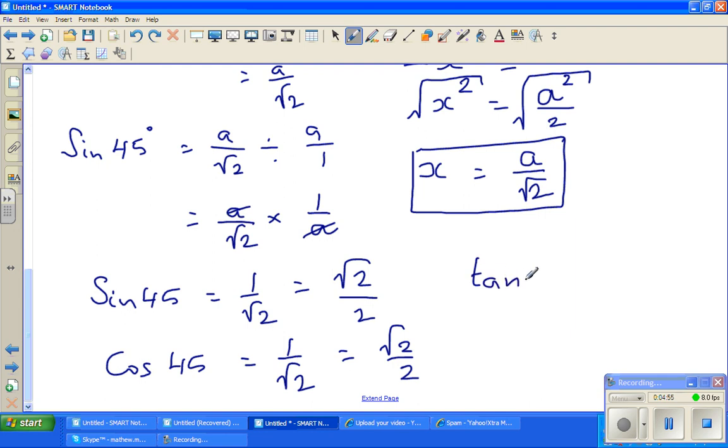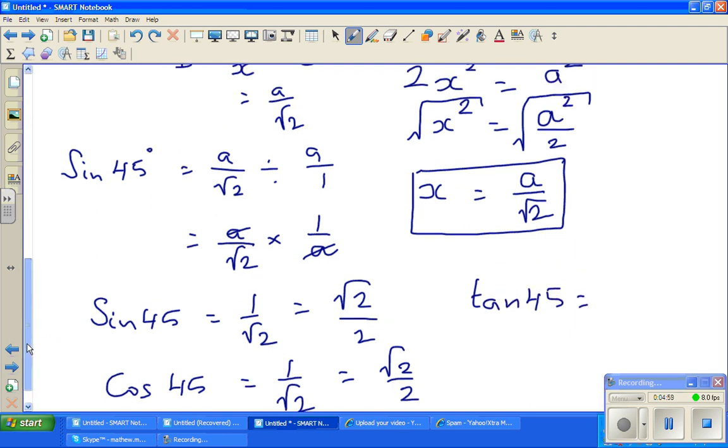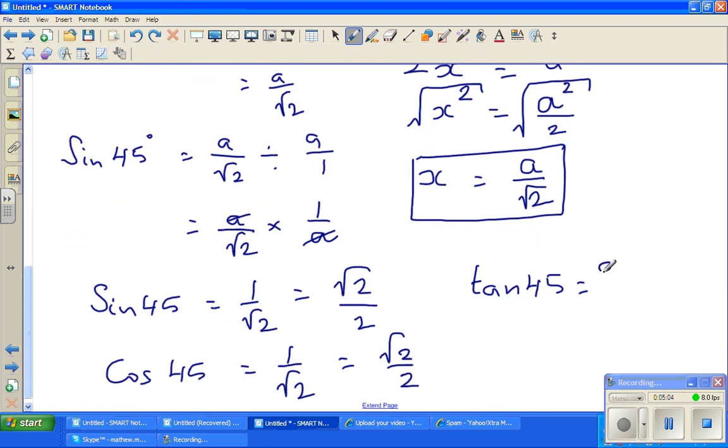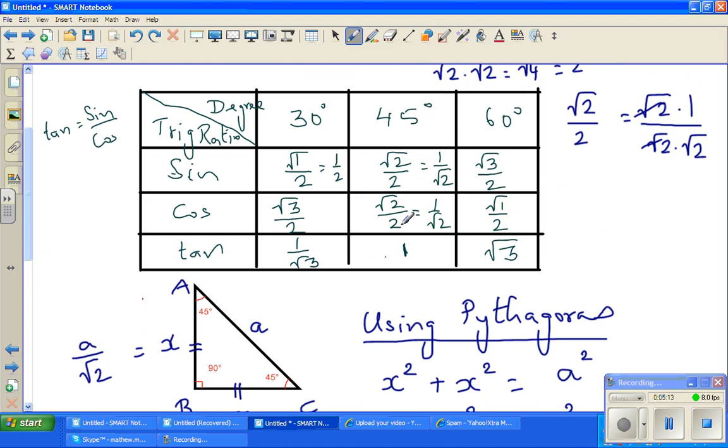And tan 45 is opposite over adjacent. Since opposite and adjacent are equal, it's a over root 2 divided by a over root 2. They are the same, so that equals 1. That's why tan 45 is 1.